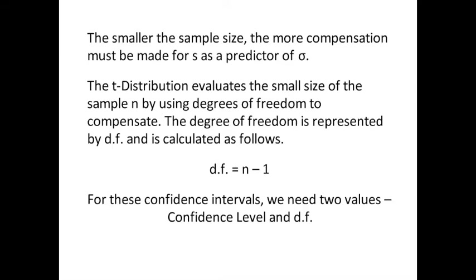The smaller the sample size, the more compensation that must be made for s as a predictor of sigma. For instance, if 30 is the magic cutoff, a 25 sample size would have a fairly good chance of s being close to sigma, where a sample size of 5 would lead to a lot of potential error. The t distribution evaluates the small size of the sample n by using what we call degrees of freedoms to compensate.